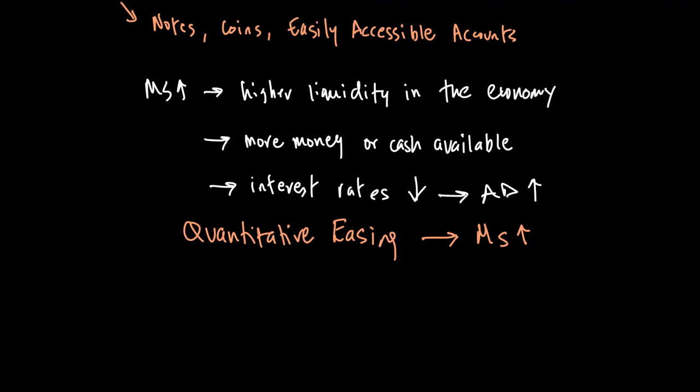On the other hand, if money supply goes down, we will have an opposite effect. When money supply goes down, there is lower liquidity. People will need to borrow money, and this borrowing creates upward pressure on interest rates. This may in turn cause the AD curve to shift backward — so money supply going down leads to interest rates going up and therefore AD falling.